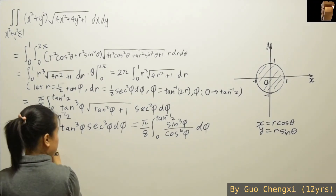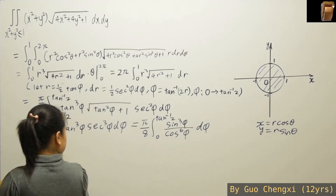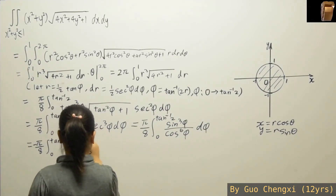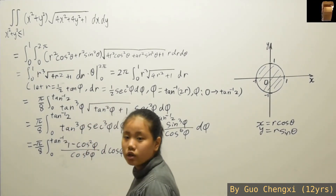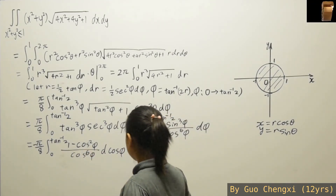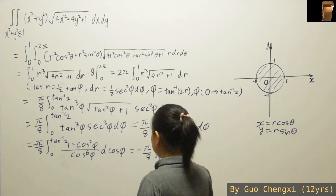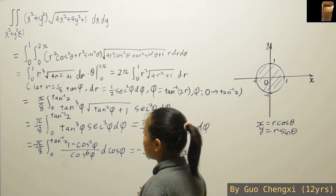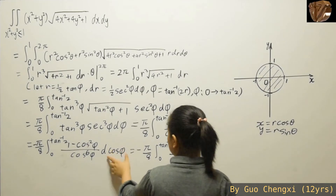Putting one sine inside makes it a negative cosine substitution. After substitution, you have (1 − cos²φ) / cos⁶φ · d(cosφ). You can then split this into two partial fraction terms: the first being 1/cos⁶φ and the second being −1/cos⁴φ. This is analogous to (1 − x²) / x⁶ dx, since the structure is the same.